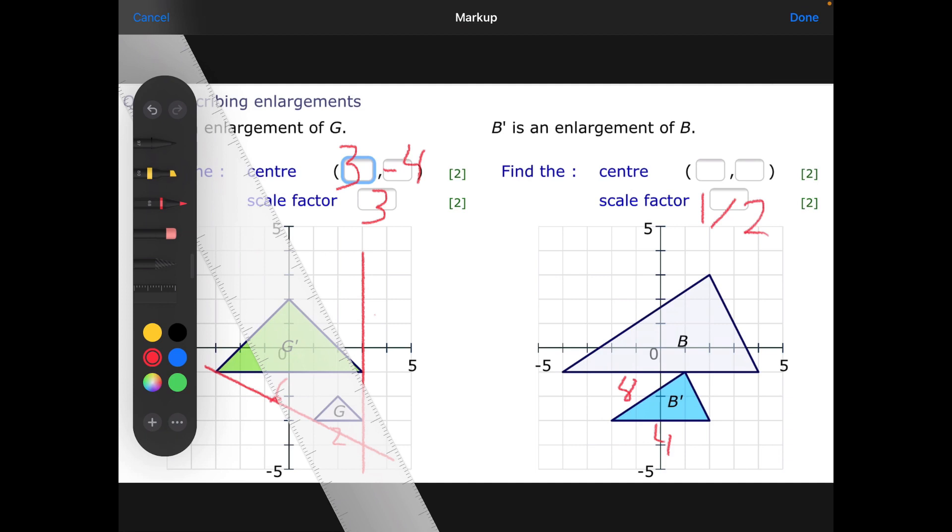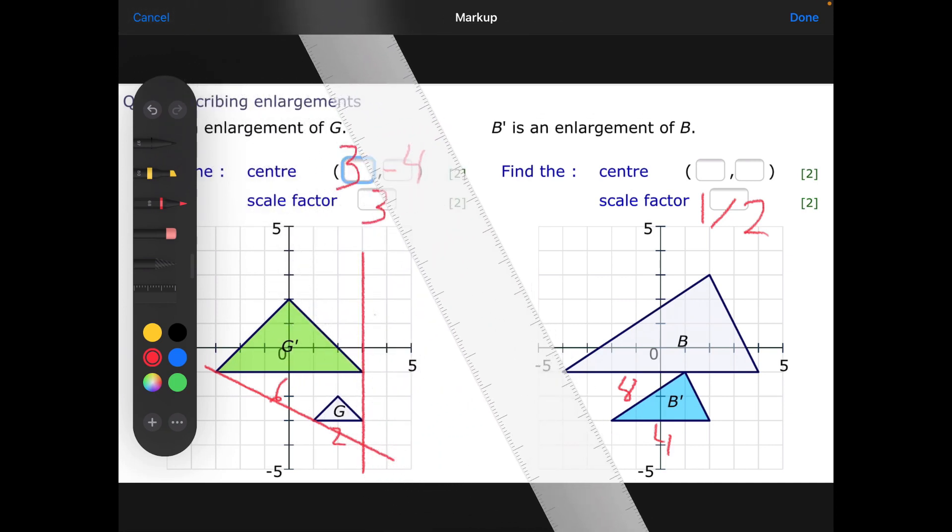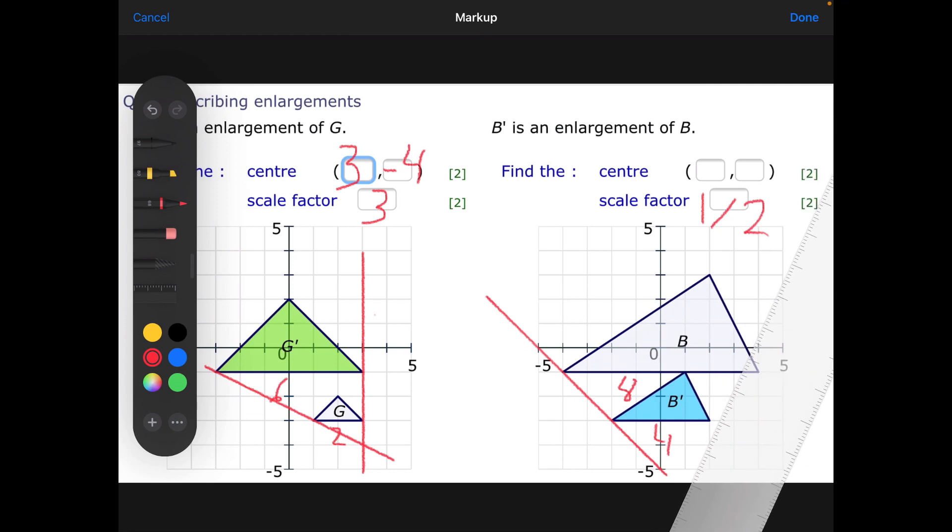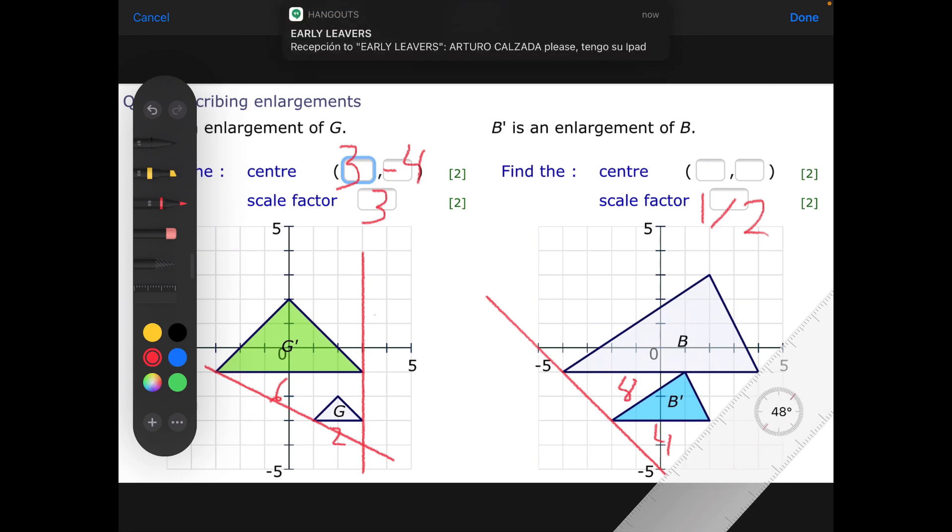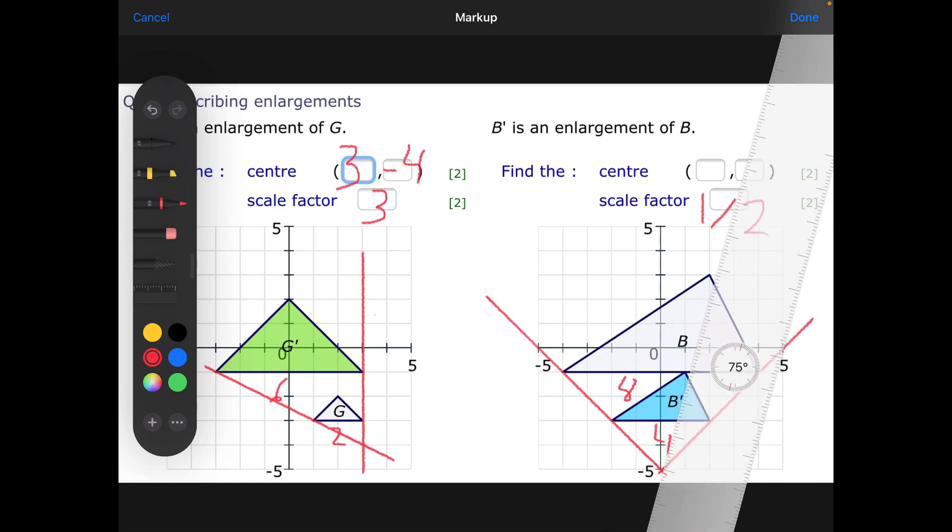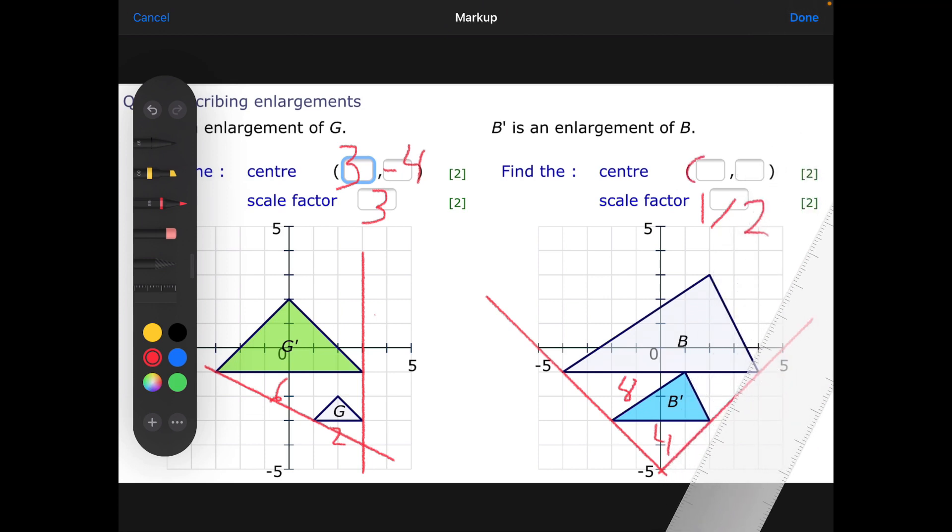Now I need to find the center of enlargement. I'm going to do the same thing I did before - get my ruler and join corresponding corners with straight lines. That one there, this one is going to go there, and you can already see where... The center of enlargement is (0, -5). Just to make sure, I'll check - yes, clearly. So it's an enlargement by scale factor of a half, center of enlargement (0, -5). Simple enough. That is how you describe an enlargement. Well done, people. I will see you soon. Bye.